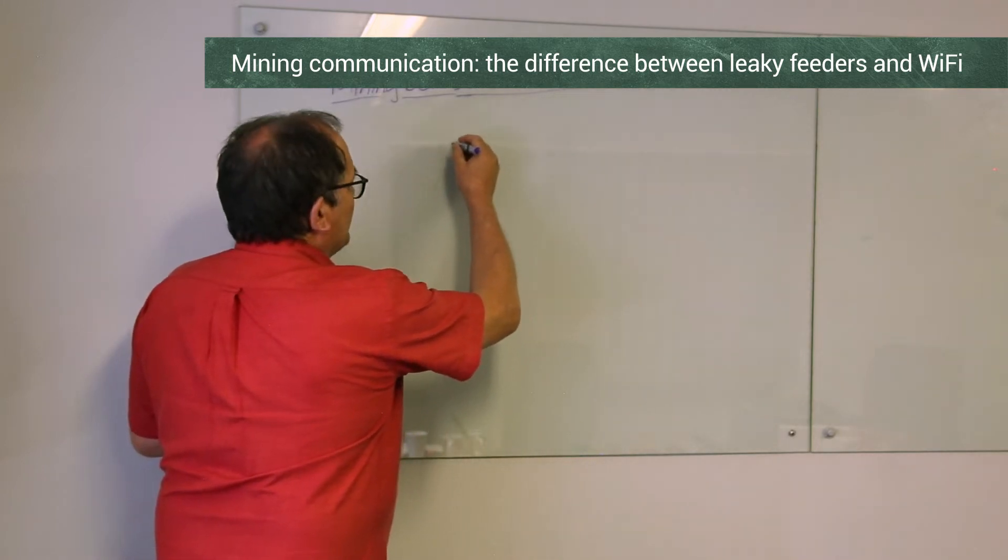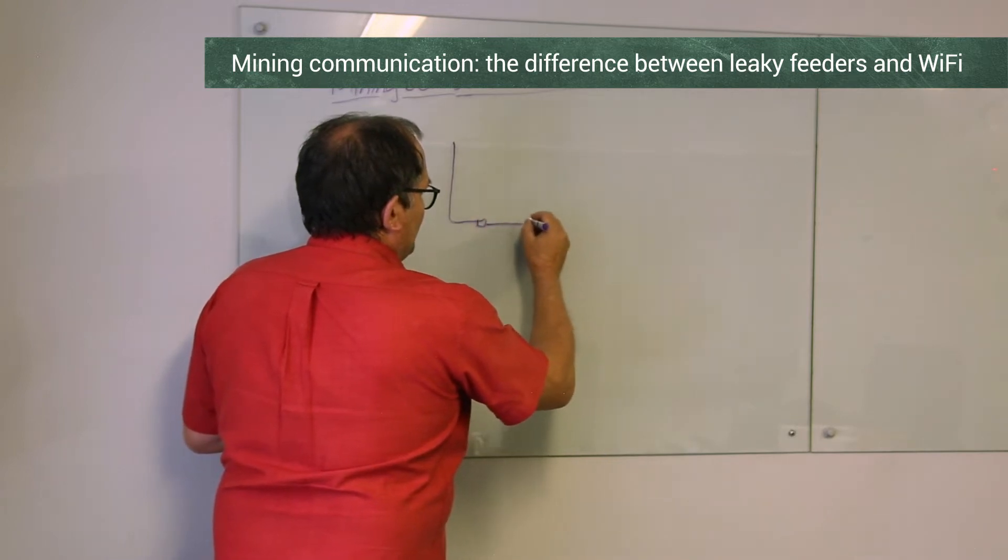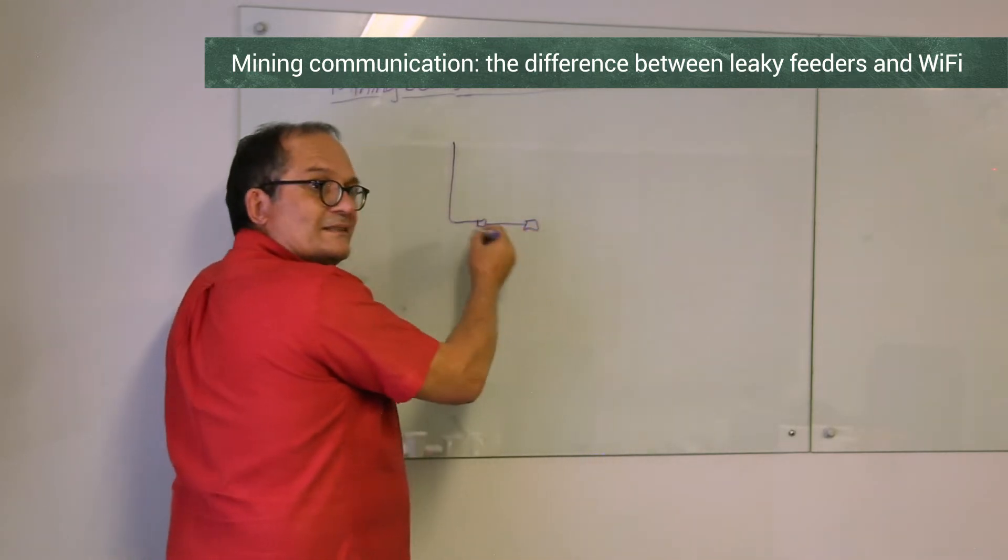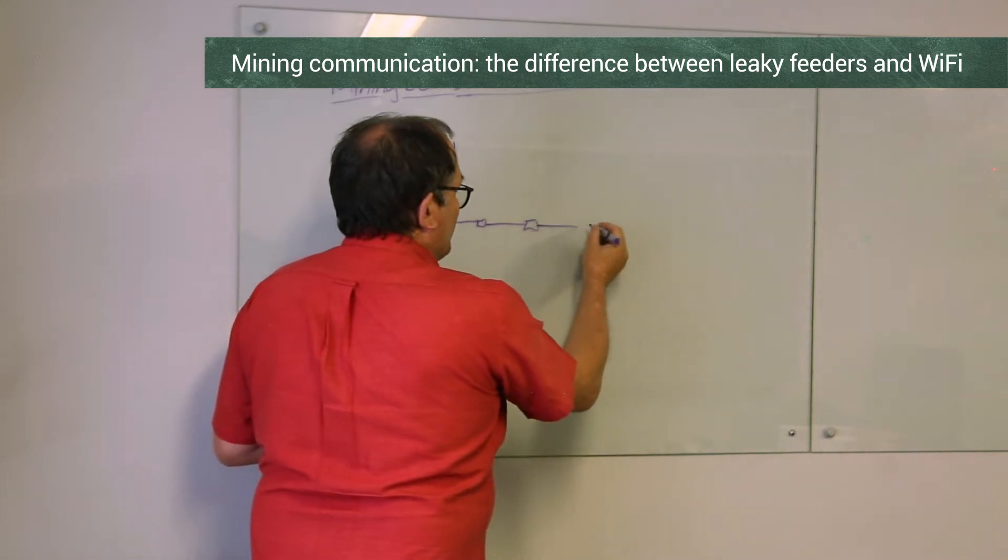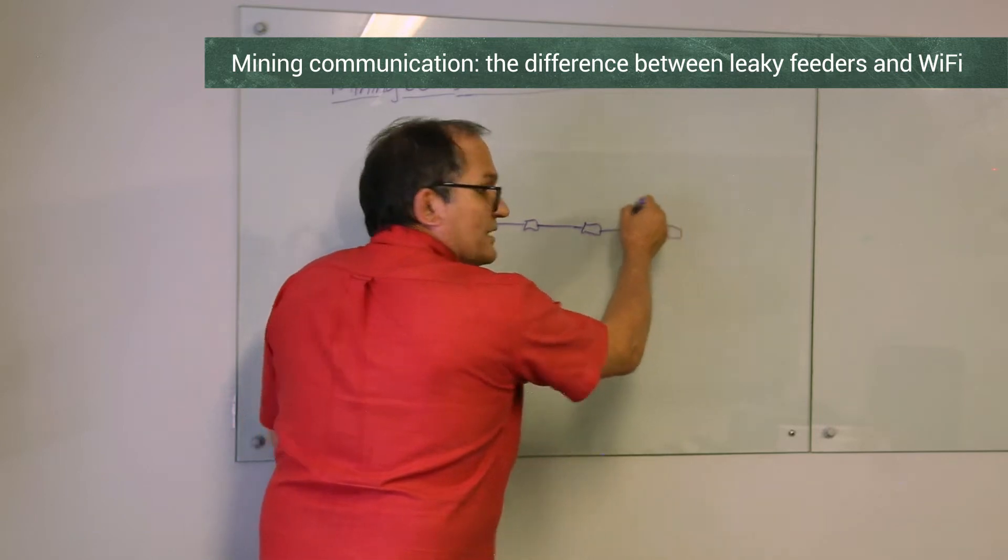Let's quickly look at how leaky feeder works and what it is. It goes down the mine and then there are refresher amplifiers because I'll explain now why you need those amplifiers.